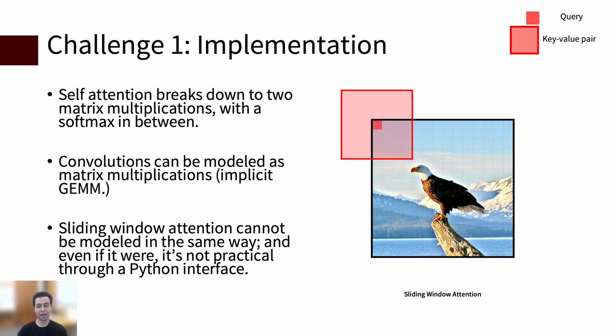Excluding the softmax, self-attention is two matrix multiplications. Convolutions can be modeled as matrix multiplications with very limited overhead. As a result, these two operations are highly optimized on most hardware accelerators such as GPUs because matrix multiplication is both among the most optimized routines in linear algebra libraries and hardware accelerators target optimizing matrix multiply and accumulate or MMA operations as well. That's what NVIDIA's Tensor Cores basically do.